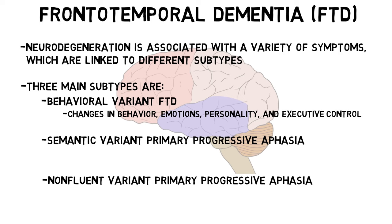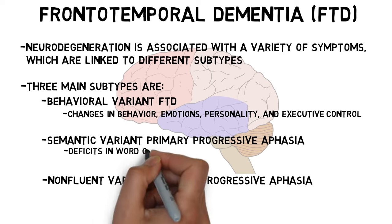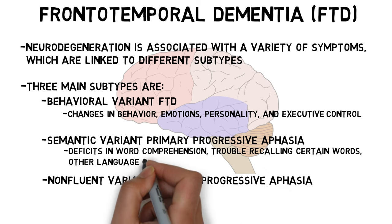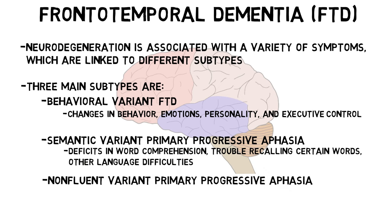In primary progressive aphasias, the main impairment is with language. Patients who have the semantic variant of primary progressive aphasia display deficits in word comprehension as well as trouble recalling certain words, along with other language difficulties.